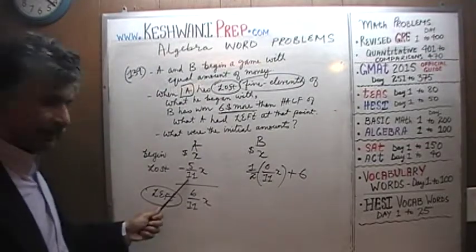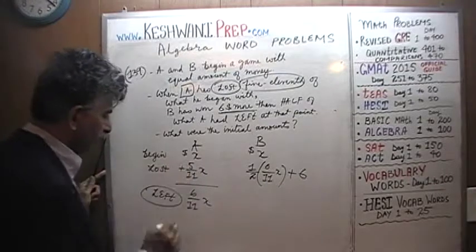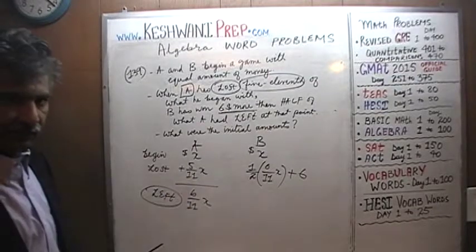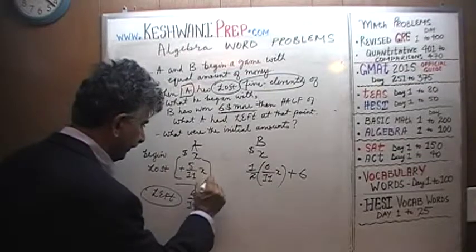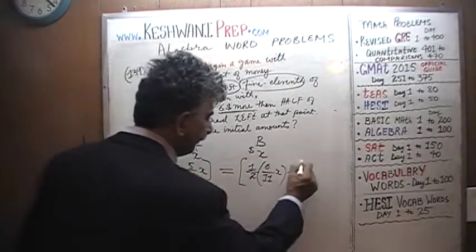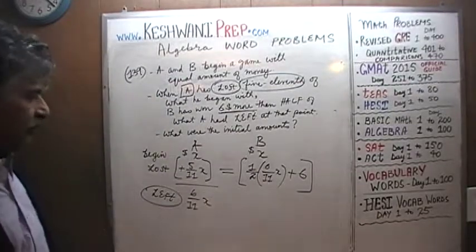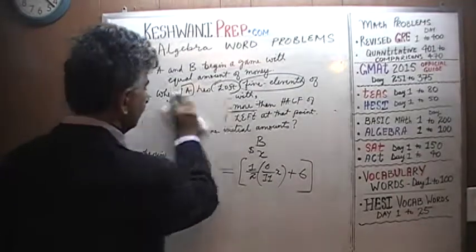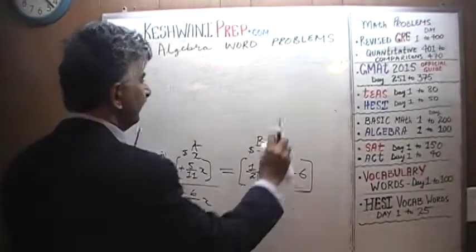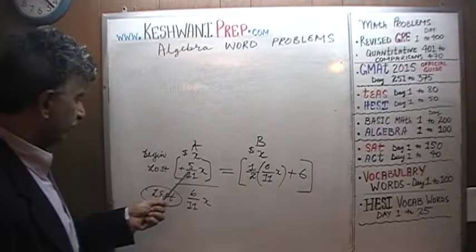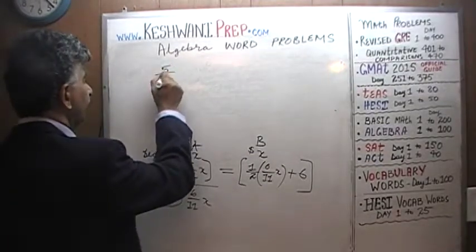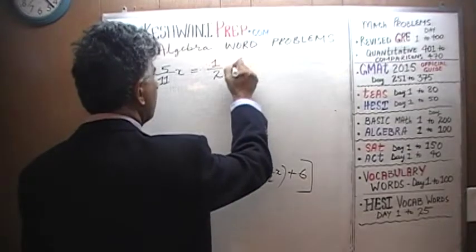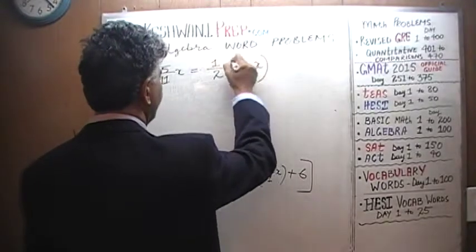That's it — we are done setting up. The amount of money A has lost must equal the amount of money B has won, since these are the only two people playing. We just have to solve this simple equation. Keeping it neat, the equation is: 5/11 x equals one half of 6/11 x, plus 6.